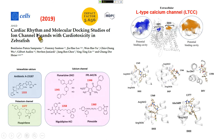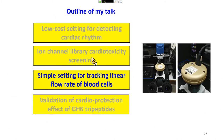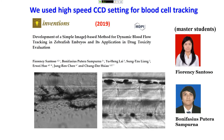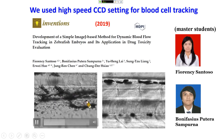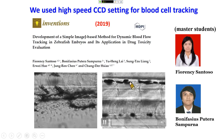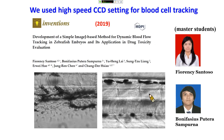Next we developed blood flow detection. Using a high-speed CCD, we recorded blood flow in the dorsal aorta and the pectoral cardinal vein. Slowing down the flow rate, you can see blood flow in the artery or vein — even individual red blood cells in the capillary. The resolution using this high-speed CCD is really good, allowing detailed observation of blood flow.